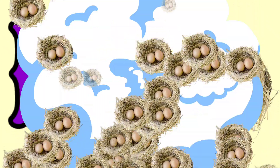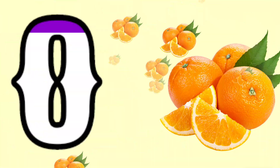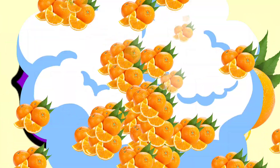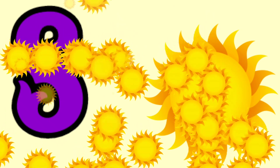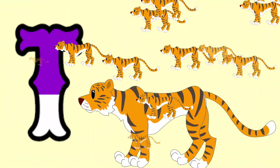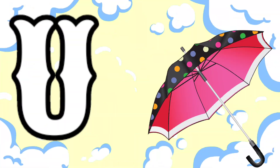M for monkey, N for nest, O for orange, P for parrot, Q for queen, R for rose, S for sun, T for tiger.